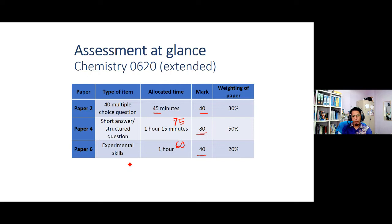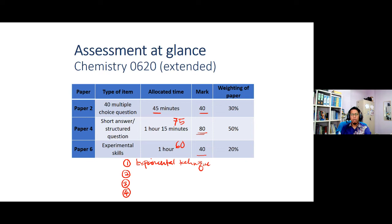Daripada 4 soalan utama, soalan pertama adalah berkenaan dengan teknik eksperimen yang asas. Dalam soalan pertama ini, kebiasaannya pelajar akan diminta untuk melabel radas atau menamakan radas, mengenalpasti kesilapan, mungkin juga diminta untuk melengkapkan rajah, atau perkara-perkara yang bersangkutan dengan kemahiran membuat eksperimen.